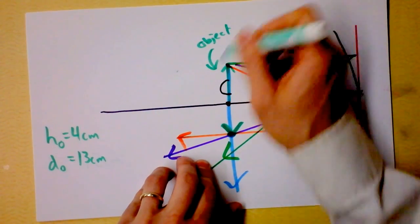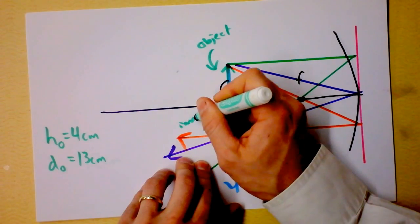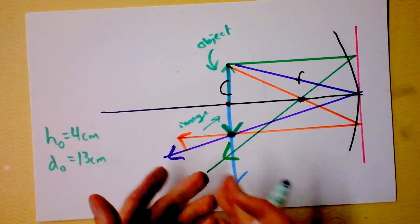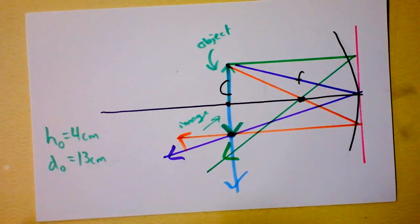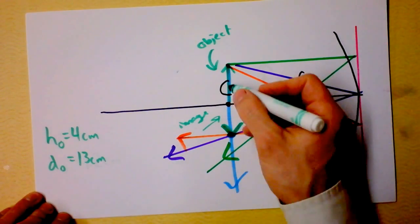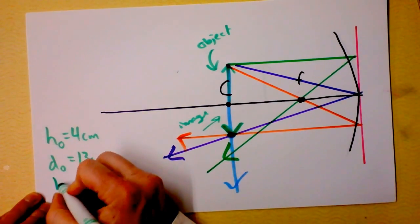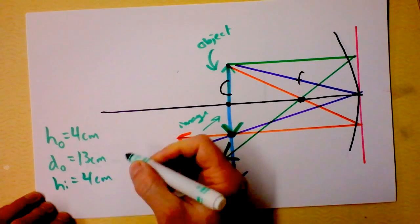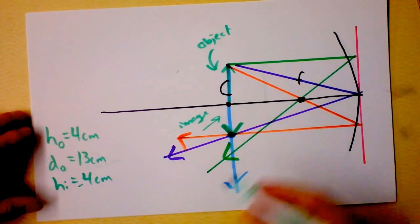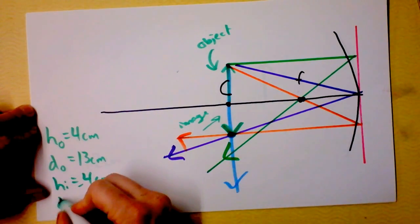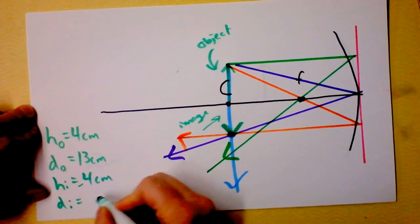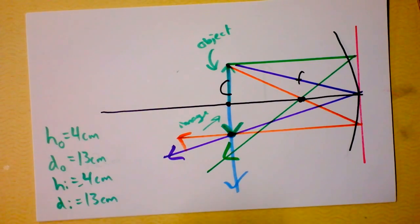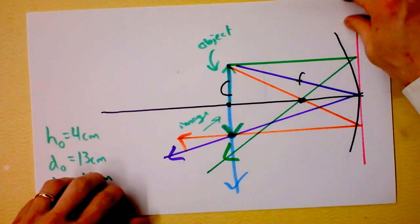There's the object, and here's the image — the outgoing rays are converging right there. The cool thing is they're meeting at C, which is really cool. Notice it's just about the same height. The height of the image is also 4 centimeters, but it's negative — it's below the axis — and the distance of the image is 13 centimeters. Everything's equal, with a minus sign.